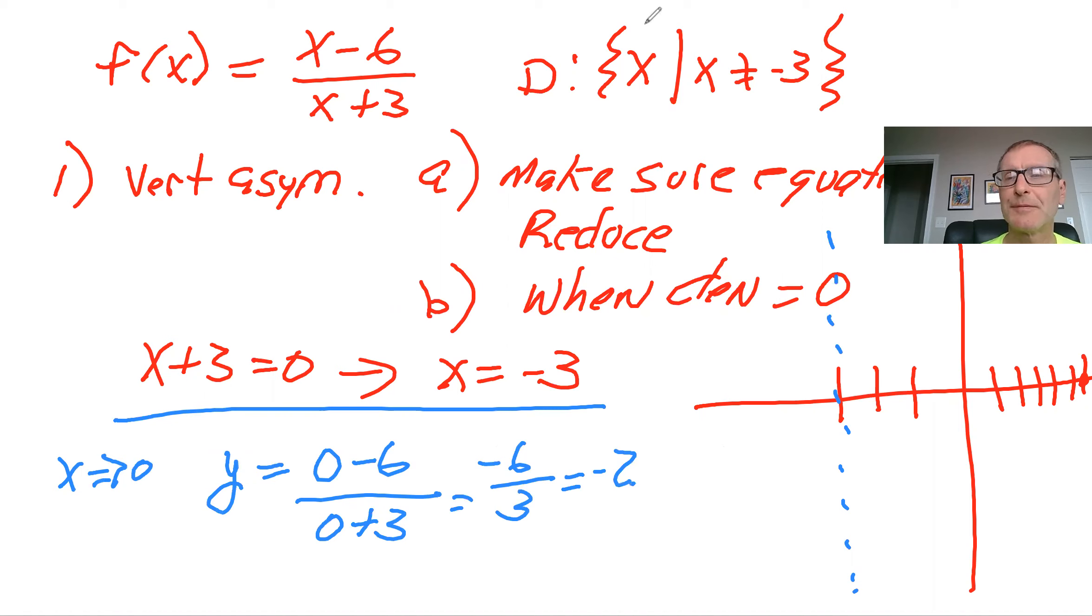So if you tried to plot this, the Y intercept would be down here at Y equals minus 2. Example number one. So here's the new stuff that we talked about. And so let's do a couple more of these.